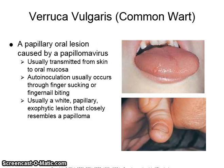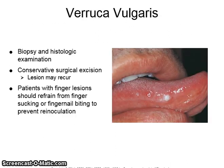Verruca vulgaris, also known as the common wart, is a papillary oral lesion caused by a papillomavirus. It is usually transmitted from the skin to the oral mucosa. Auto-inoculation usually occurs through finger sucking or fingernail biting. The appearance is usually a white papillary exophytic lesion that closely resembles a papilloma. Diagnosis is via biopsy and histologic examination.